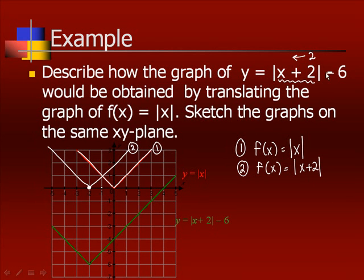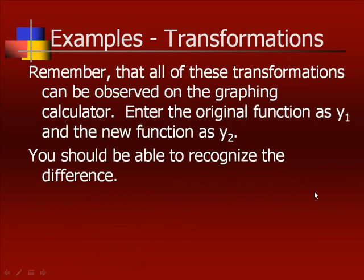The second part would be f(x) = |x + 2| inside the bars. The third one, the minus 6 on the end, is going to shift us down 6. 1, 2, 3, 4, 5, 6. Then we're going to do our same basic shape absolute value. That would be the third step: f(x) = |x + 2| - 6. Remember, all of these transformations can be observed on the graphing calculator. Enter the original function as y1 and the new function as y2, and you should be able to make sure that your shifts are going in the right direction.